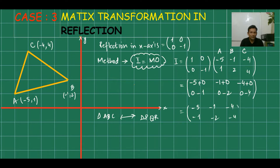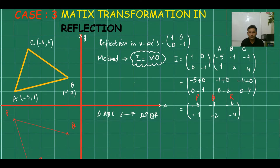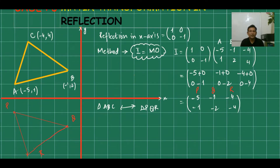Let's verify: P is (−5, −1), Q is (−1, −2), and R is (−4, −4). Plotting these and joining the points gives us the reflected triangle. You can see the first line, second, and third line — we have done the reflection successfully.